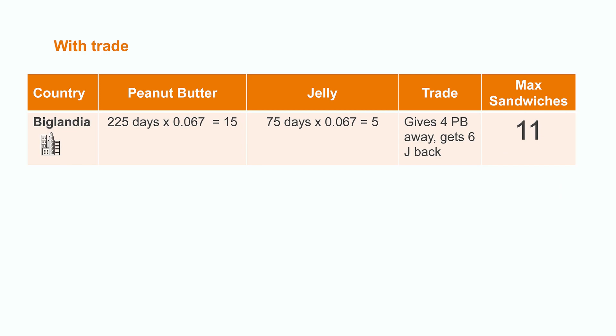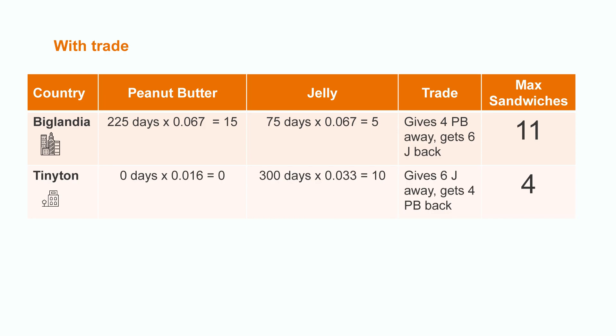The two countries can then trade. They set a rate of 1.5 jellies for 1 peanut butter. Then Biglandia trades Tinyton 4 tons of their own peanut butter for 6 tons of jelly. This results in Biglandia getting 11 tons of sandwiches, and Tinyton getting 4 tons of sandwiches.